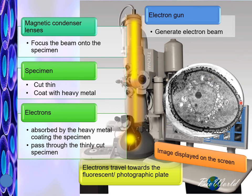Wherever the color is dark, that is where the electrons had been absorbed by the specimen. And so those electrons did not reach the fluorescent plate — that's why it remains dark. Places which are lighter in color are places where the electrons passed through the specimen, so those electrons arrived at the fluorescent plate and caused the image to turn white.